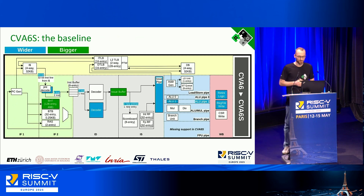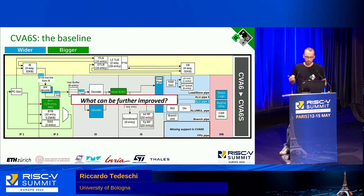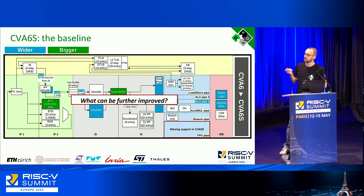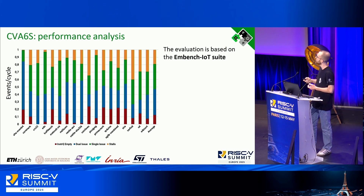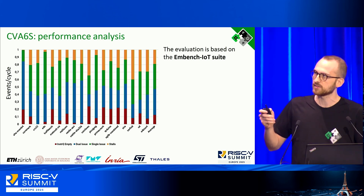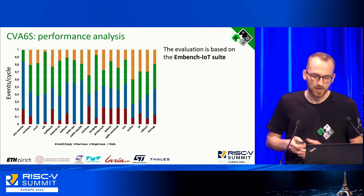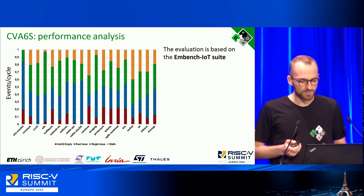Let's start from the baseline: CVA6S, the original core with additional superscalar changes but missing FPU support. To answer what else can be improved, we performed a systematic analysis of all the bottlenecks using the MBench IoT suite of workloads — workloads tailored to IoT nodes. This plot shows the probability of different stall conditions throughout the pipeline, normalized to the cycle count.